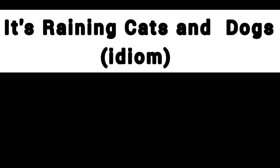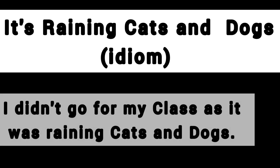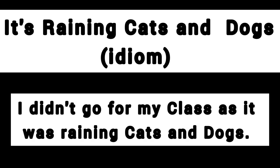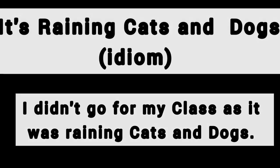There is one idiom also used to describe heavy rains: 'it's raining cats and dogs.' It's a very beautiful idiom used for very heavy rains. For example: 'I didn't go for my class as it was raining cats and dogs.' You can also say 'it's raining buckets out there,' which also means it is raining very heavily outside. For example: 'Be sure to put on your raincoat — it's raining buckets out there.' Any of these expressions or idioms you can use to talk about heavy rains.